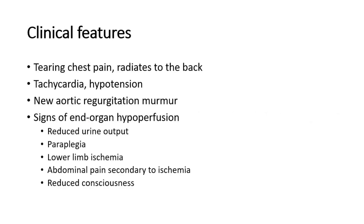The characteristic presentation of an acute aortic syndrome is a tearing chest pain, classically radiating to the back. The most common clinical signs include tachycardia, hypotension, new aortic regurgitation murmur, or signs of end-organ hypoperfusion, such as reduced urine output, paraplegia, lower limb ischemia, abdominal pain secondary to ischemia, or deteriorating conscious level.